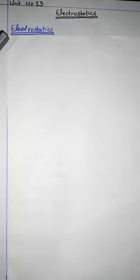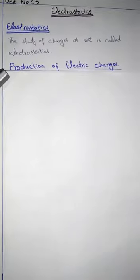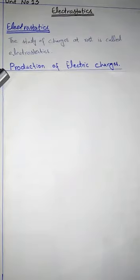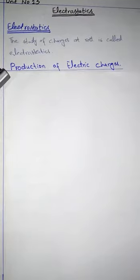In this case, we will learn about different properties, static charges, electric forces, electric field, and electric potential. First of all, the question arises about production of electric charges. The study of charges at rest is called electrostatic or static electricity. Now, the next question is: how can we produce electrical charges?